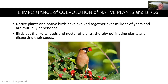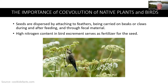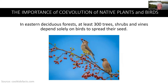I'll now review the importance of co-evolution of native plants and birds. Native plants and native birds have evolved together over millions of years and are mutually dependent. Birds eat the fruits, buds, and nectars of plants, thereby pollinating plants and dispersing their seed. Seeds are dispersed by attaching to feathers, being carried on beaks or claws during and after feeding, and through fecal material. The high nitrogen content in bird excrement serves as fertilizer for the seed. In eastern deciduous forests, at least 300 trees, shrubs, and vines depend solely on birds to spread their seeds.